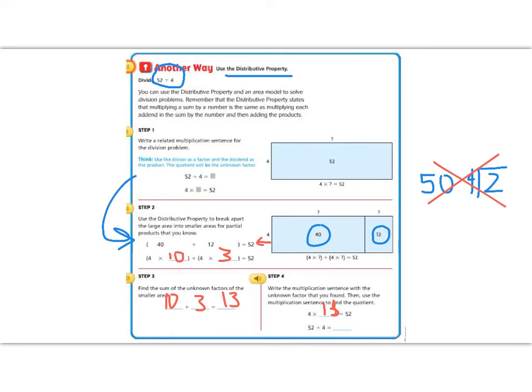10 plus 3 is 13. So 4 times 13 is 52. So then 52 divided by 4 equals 13. Let's divide on the side to check. 52 divided by 4. 4 goes into 5 one time, which is 4, remainder 1. Bring down the 2. 4 goes into 12 three times, which is 12, subtract, no remainder. So our answer is 13.